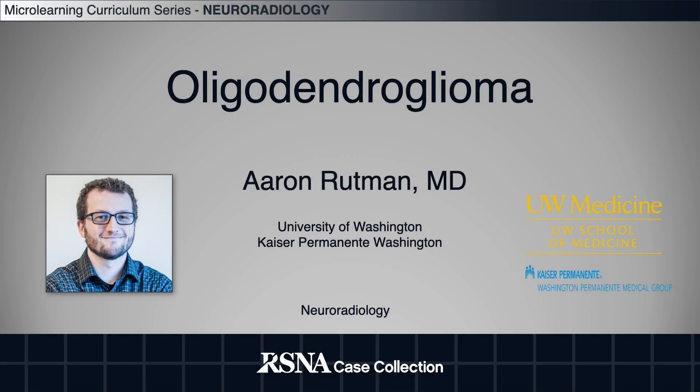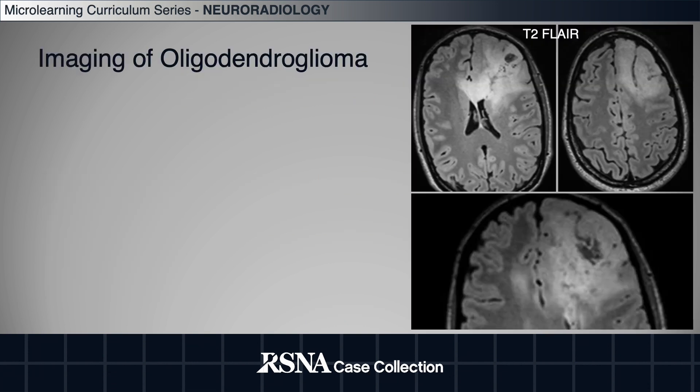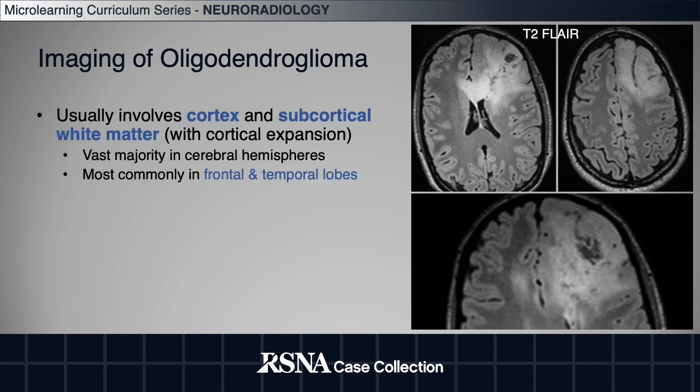Hi, my name is Aaron Ruttman. I'm a neuroradiologist. Let's talk about a specific primary brain tumor called an oligodendroglioma. An oligodendroglioma is a tumor usually involving the cortex and subcortical white matter, mostly in the frontal and temporal lobes.